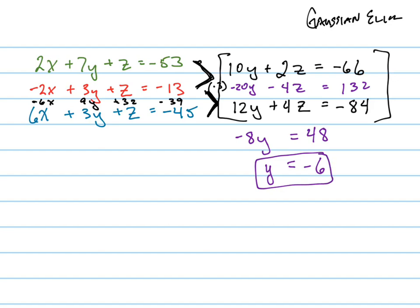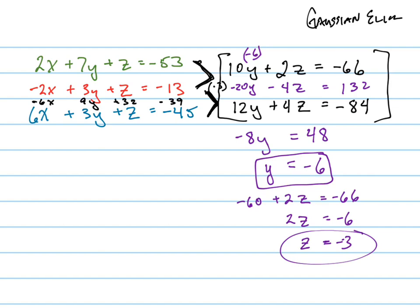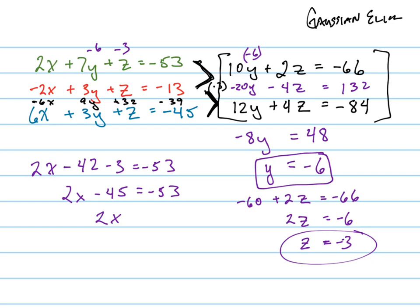Plug y back in: negative 60 plus 2z equals negative 66. So 2z equals negative 6, meaning z equals negative 3. Now that I've found z, I can plug both values into any one of the original three equations to solve for x. That gives 2x minus 42 minus 3 equals negative 53, so 2x minus 45 equals negative 53, meaning 2x equals negative 8, so x equals negative 4.